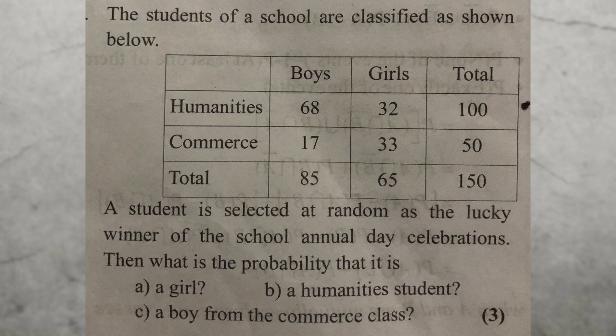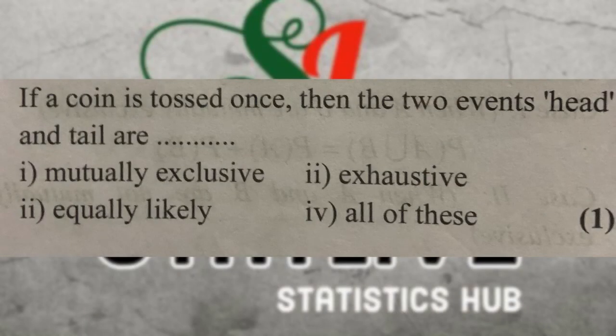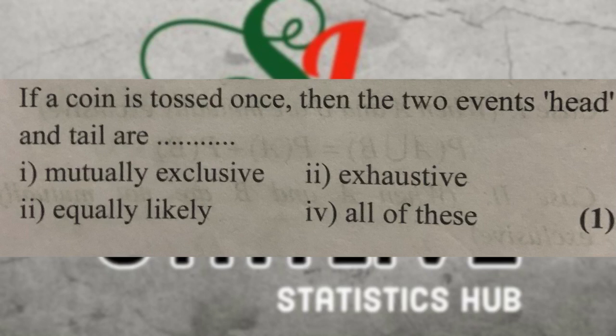The next question: if a coin is tossed once, the two events are head and tail. Then these two events are mutually exclusive, exhaustive, and equally likely. There are three properties that apply here. The answer is that head and tail are mutually exclusive, exhaustive, and equally likely events.